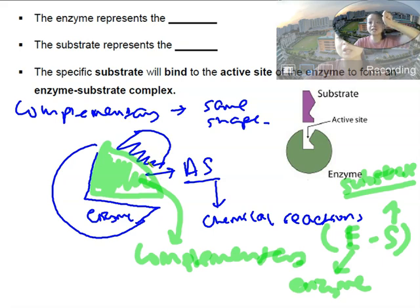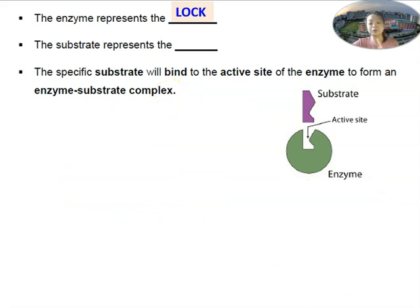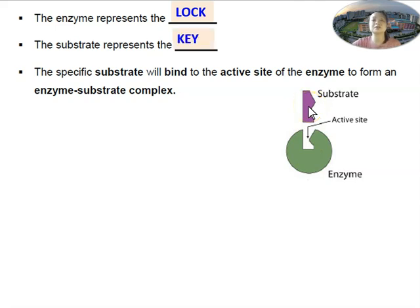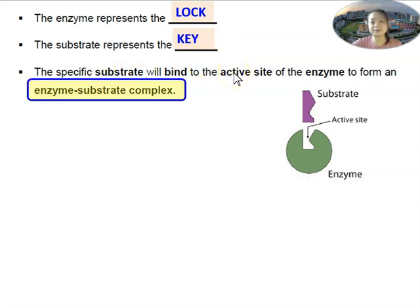We are now going to look at how the lock and key hypothesis explains how enzymes are specific. You know what a lock is — a lock is that thing where you put a key in to open a door. So which one is the lock and which is the key? The enzyme is actually the lock — it has a small depression known as the active site. The substrate is the key. Just like every lock only has one specific key to open it, it is the specific substrate that will bind to the active site of the enzyme.